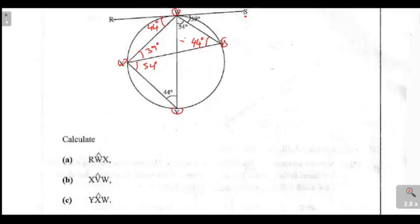So the question is, calculate RWX. RWX. So where is our R? You can see the R is coming right there from the tangent here. RWX. So the angle at RWX, you can see, we have answered it.